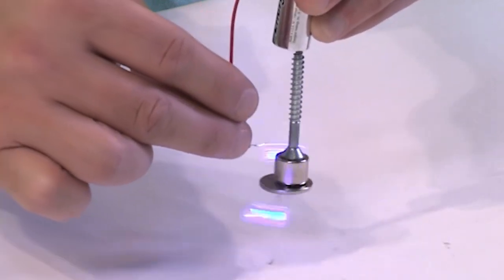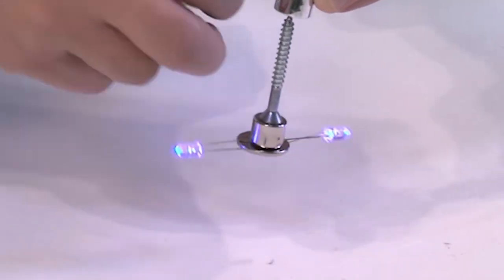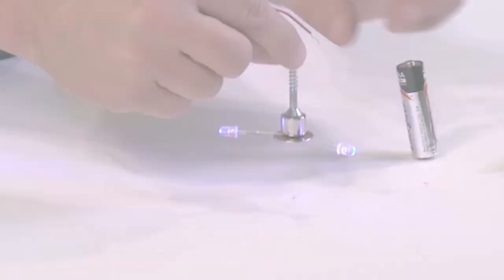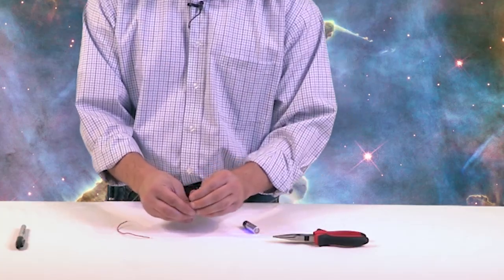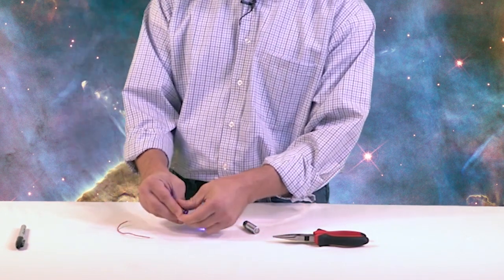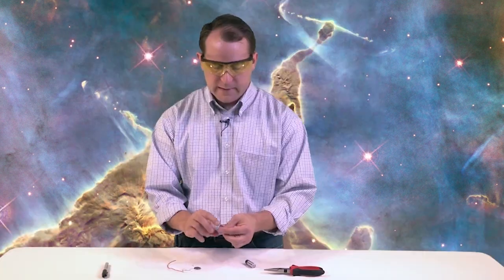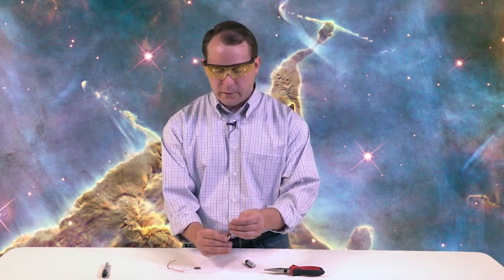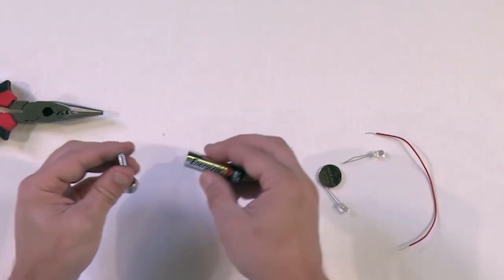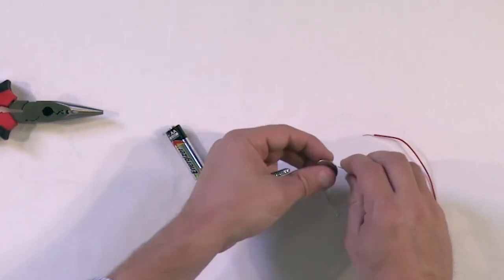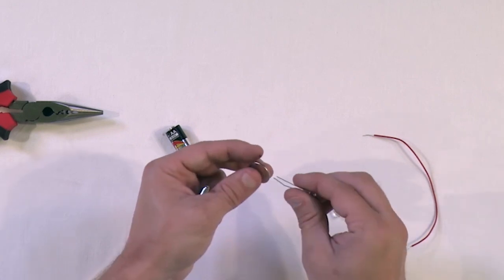So notice the direction this thing is turning right now. When you're looking down, it's turning clockwise. Now let me show you what happens. Since this force that actually pushes the magnet is dependent on the current that's going in the wire and it's also dependent on the magnet, if we flip the magnet over, that's all I've done, flip the magnet over, then what should happen is it should spin the other way. So instead of clockwise, it should spin now counterclockwise. So let's see if that actually happens.